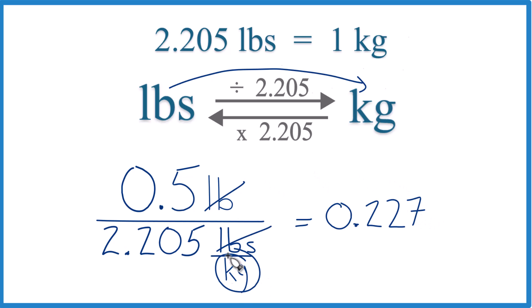And remember, we were trying to figure out kilograms. So those are the units that we're left with here. So 0.5 pounds, that's 0.227 kilograms. And this is rounded a little bit. That's how you do it.